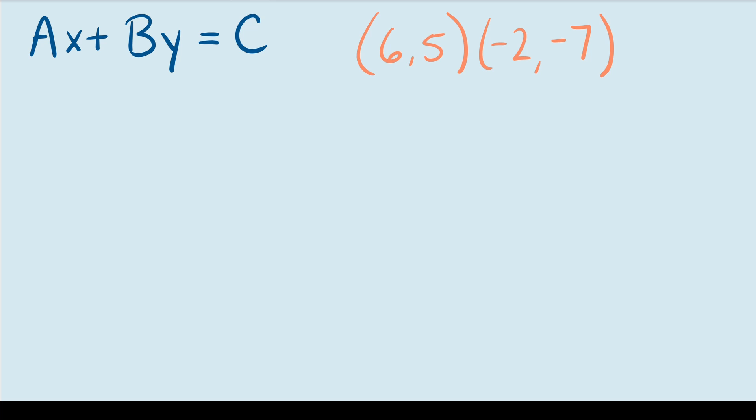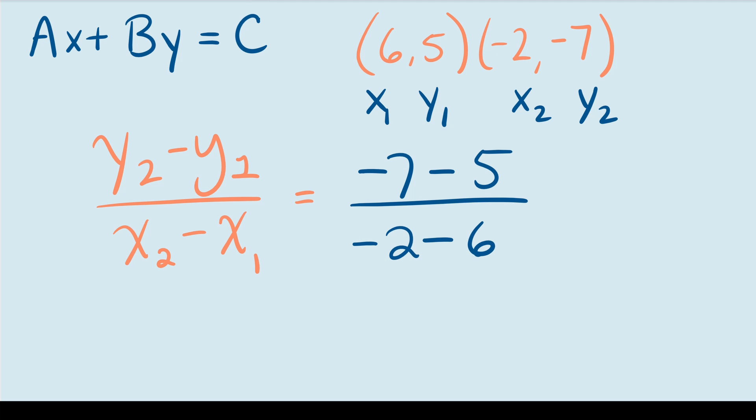First, we want to find the slope of this line. To do that, all we need to use is this formula right here. Now, I've already covered this in a previous video. So go ahead and watch that first. To find the slope, I'm going to make this x1 and y1 and this one x2 and y2. So doing that gives me negative 7 minus 5 in the numerator and in the denominator, it gives me negative 2 minus 6.